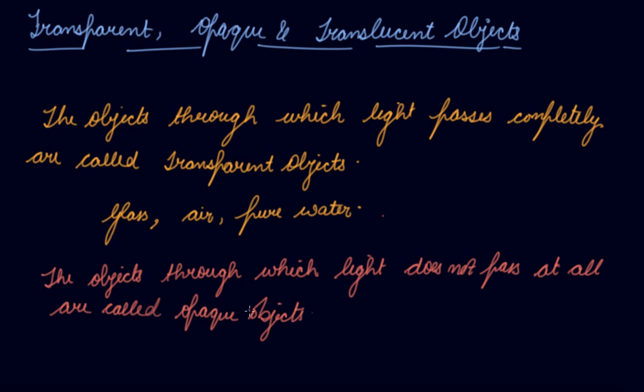are called opaque objects. So they do not allow light to pass through them like pure wood, and then you can say any hard object, book, you cannot see behind them, metal. So they do not allow light to pass from them, so these are the opaque objects.